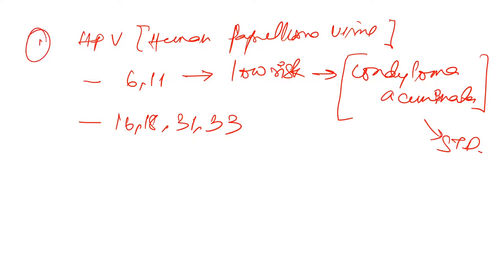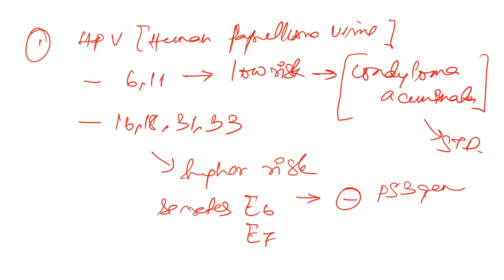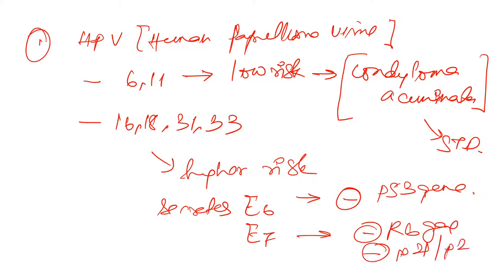HPV strains 16, 18, 31, and 33 are higher risk. They secrete proteins E6 and E7. E6 inhibits the P53 gene. E7 inhibits the RB gene, inhibits P21 and P27, and leads to increased activity of cyclin A or E.